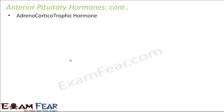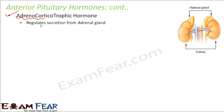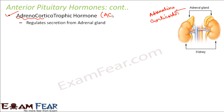Next is adrenocorticotrophic hormone, abbreviated as ACTH. This regulates the secretion from the adrenal gland — that is why it is named adrenocorticotrophic. The adrenal glands secrete hormones like adrenaline and corticoids, and the secretion of all these hormones is controlled by ACTH from the pituitary gland.